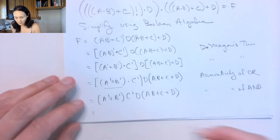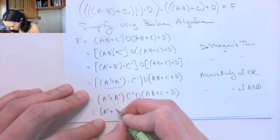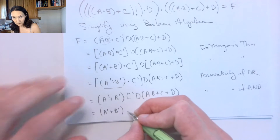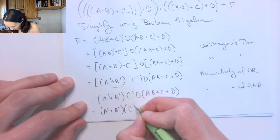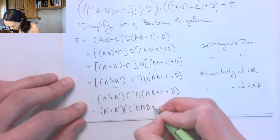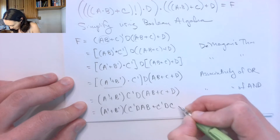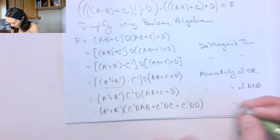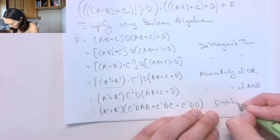So applying distribution, this first part stays the same, and I get: C̄D ANDed with A, B — or C̄D ANDed with C — or C̄D ANDed with D. This is by distribution.